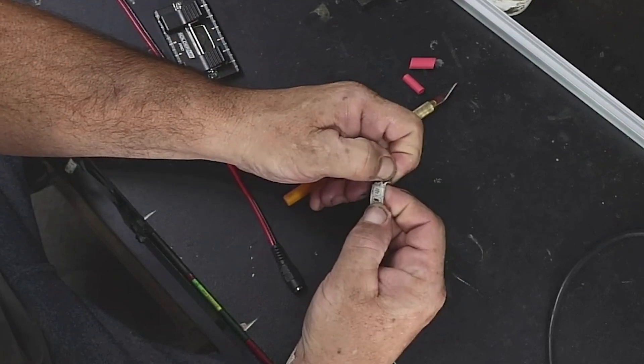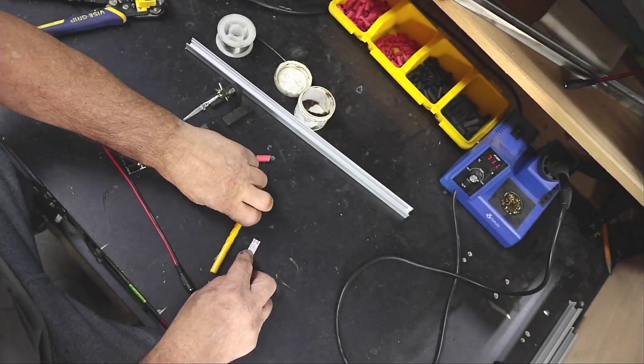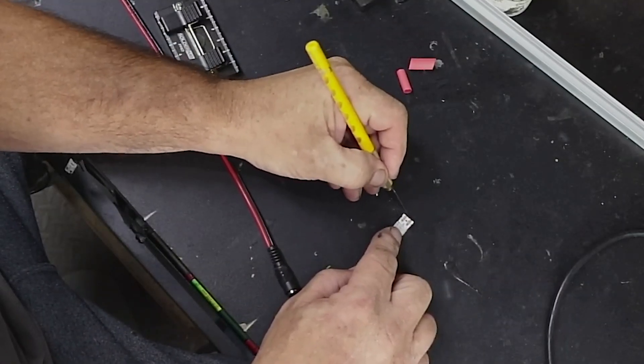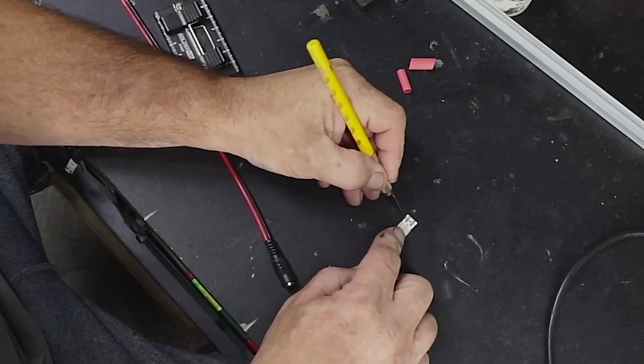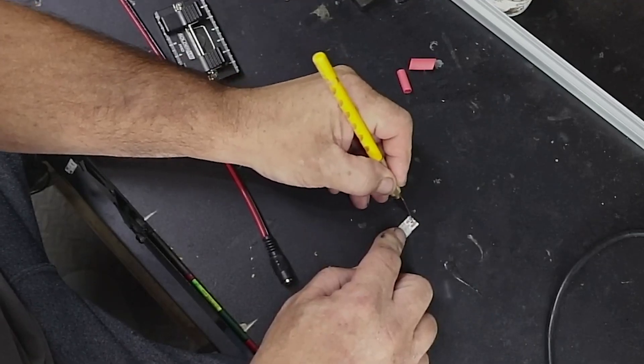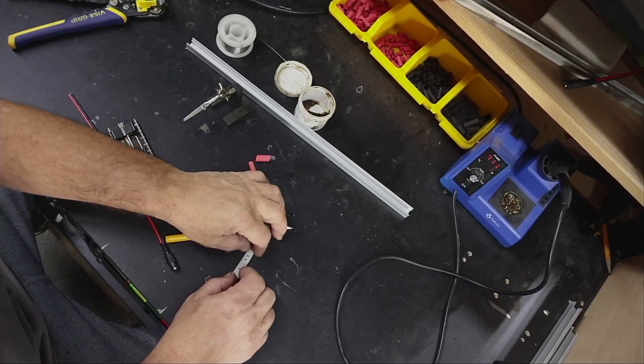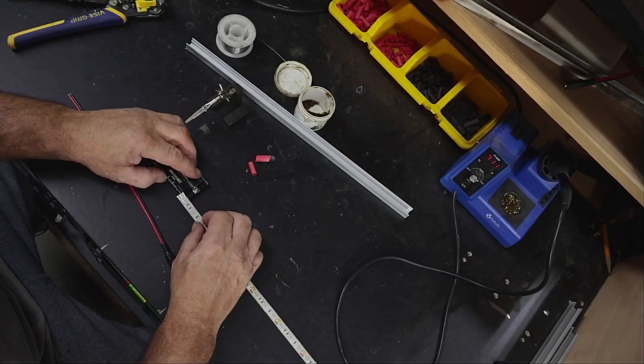Now the one thing you always have to remember to do - you see these copper eyelets? You have to scrape them. Do you see that silicone come off? You have to get that off there until it's shiny. Same with the other side. And there you have it. Once that's done, I put it in the jig.